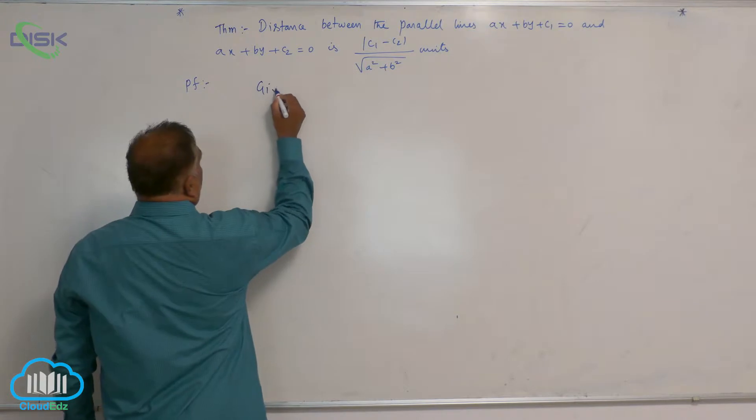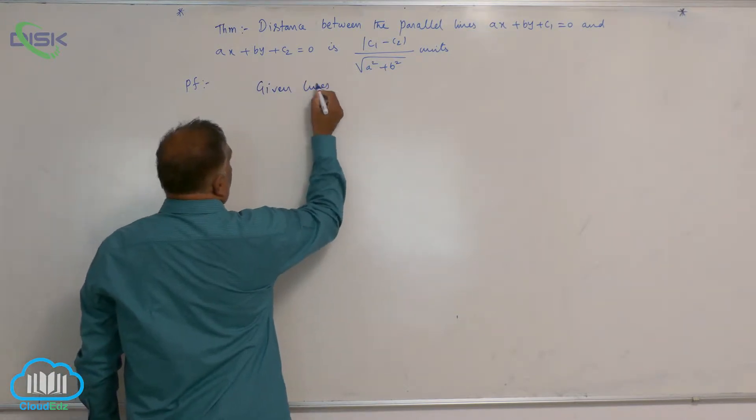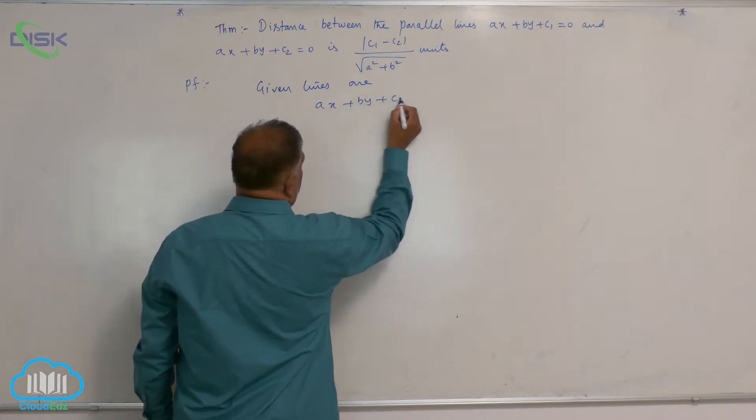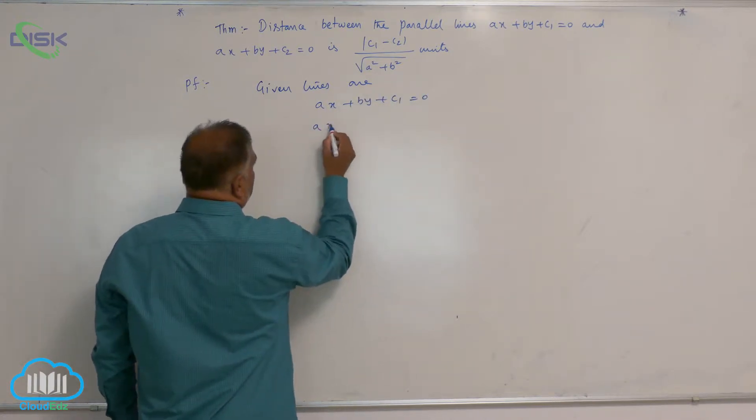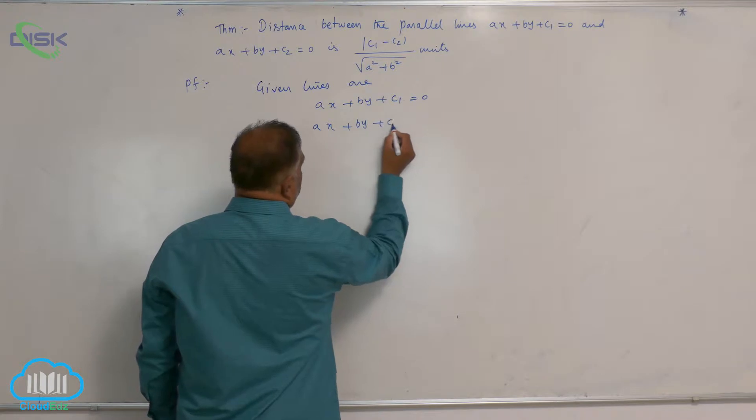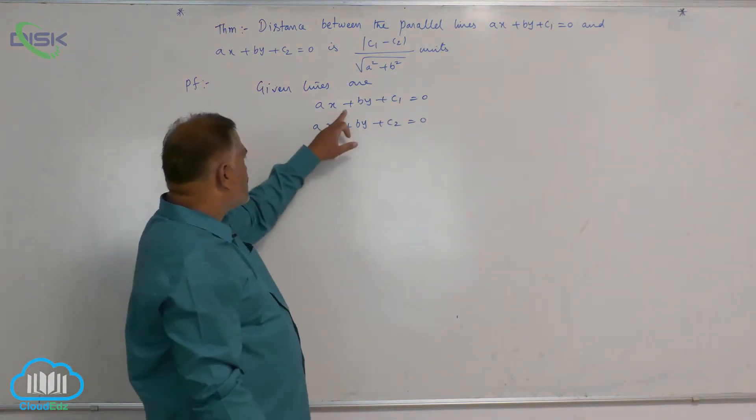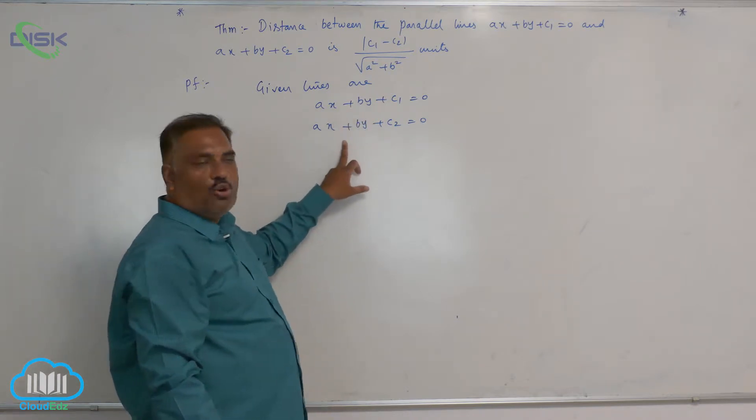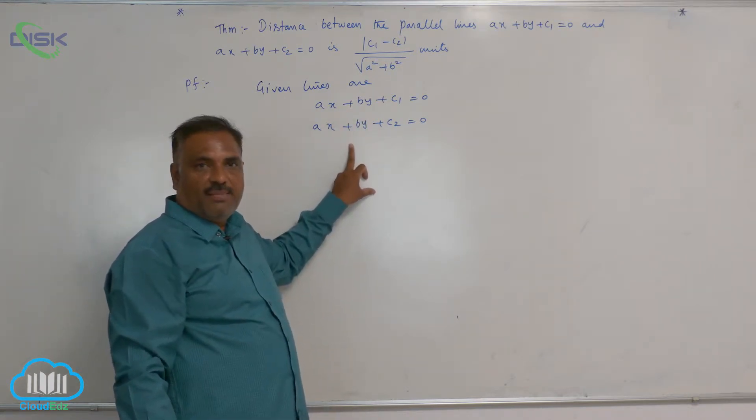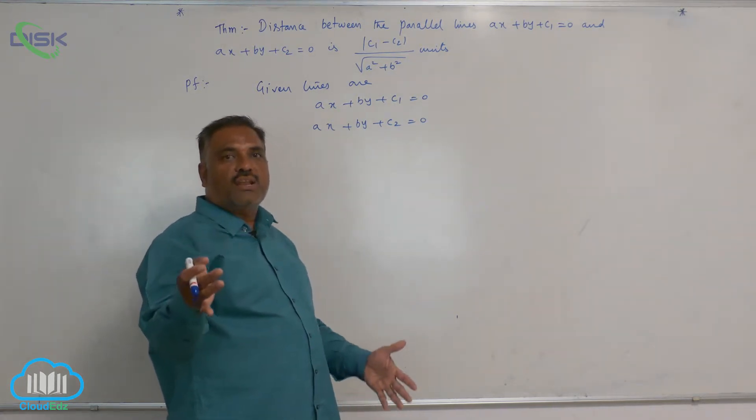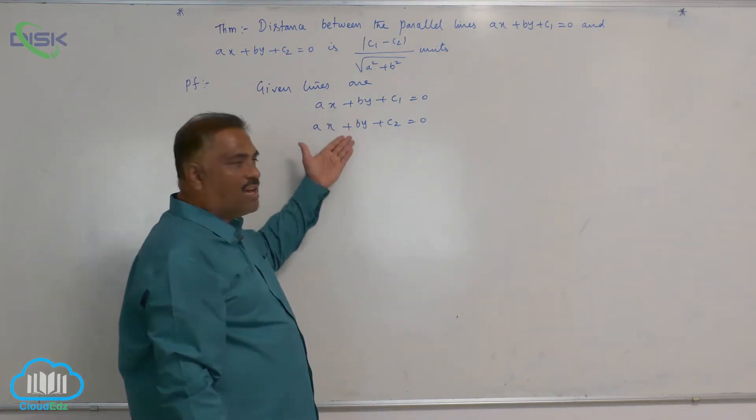Let us consider given lines are AX plus BY plus C1 is equal to 0, AX plus BY plus C2 is equal to 0. We observe that the slope of first line is minus A by B, the slope of second line is also minus A by B. When two slopes are equal, the two lines are parallel.